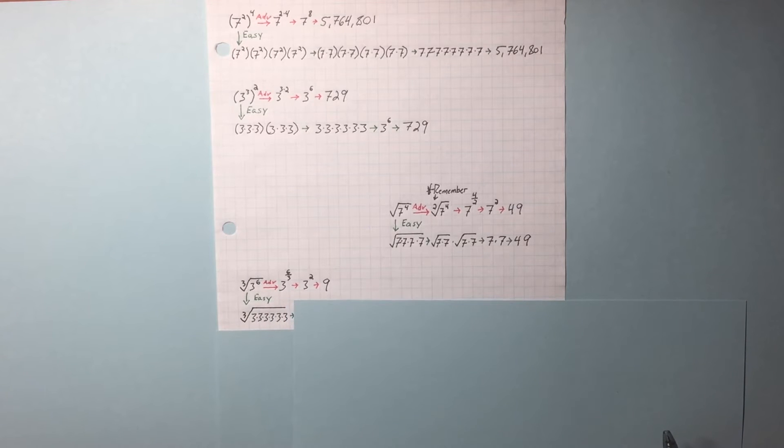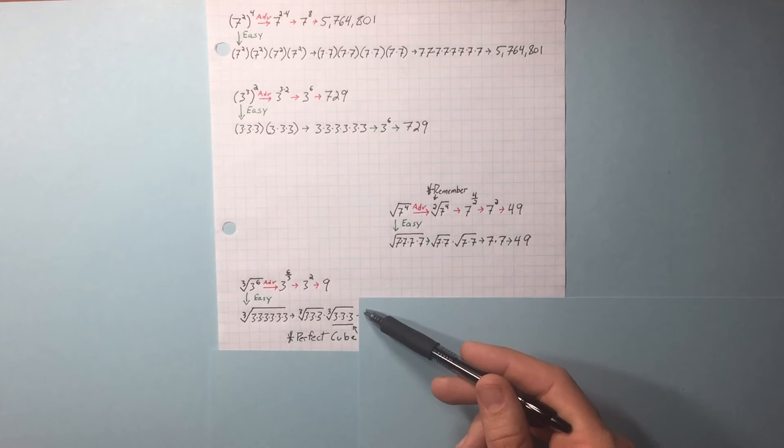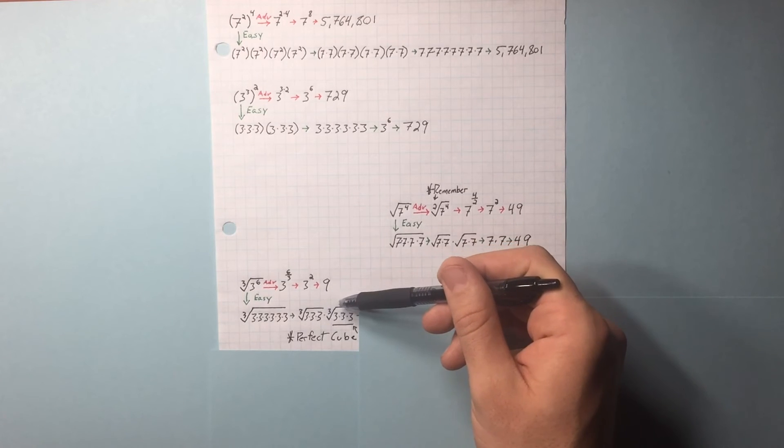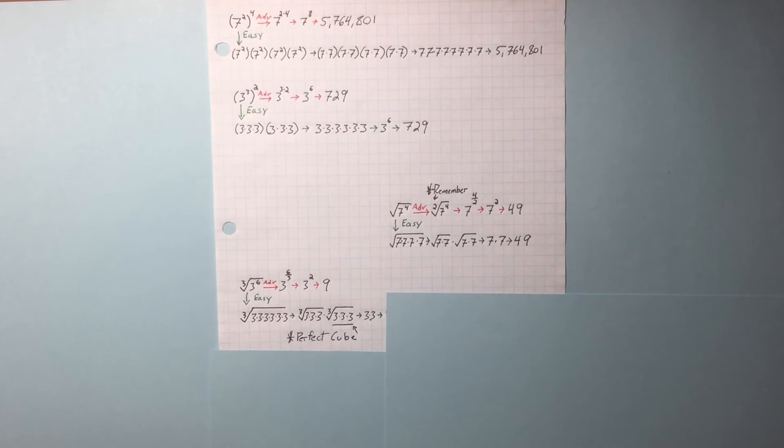So I go ahead and expand that. There are plenty of perfect cubes in here. Because we're dealing with a cubed root, we need to be looking for perfect cubes, not perfect squares. Underneath the square root, a perfect square is 2. Underneath the cube root, a perfect cube is 3. So we have two sets of perfect cubes. 3 times 3.